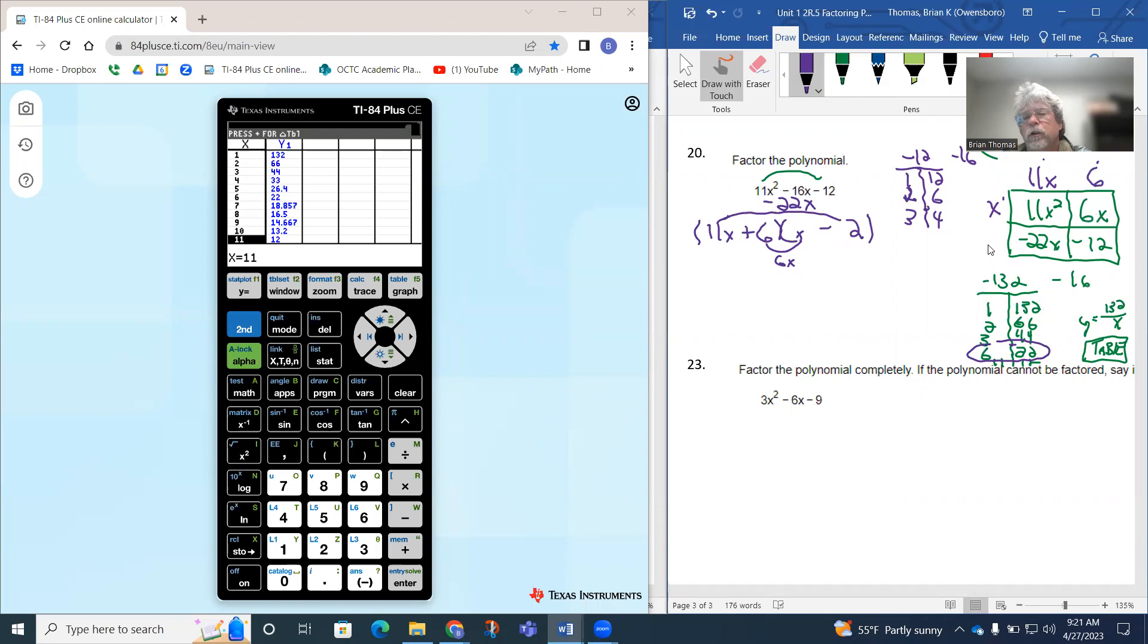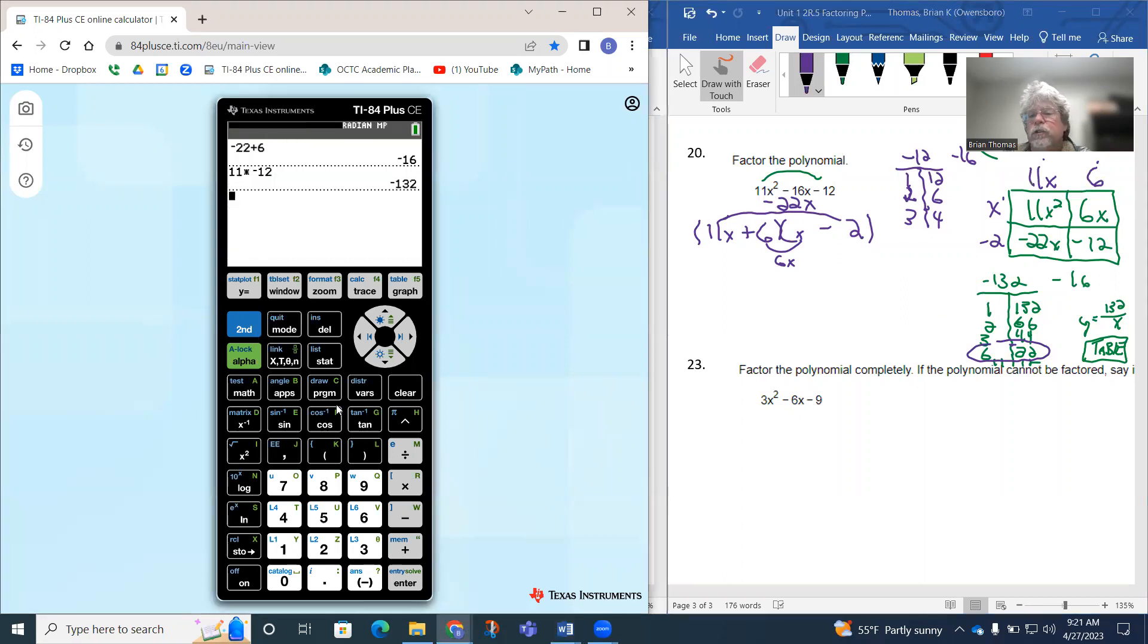Then if we come down here, what times 11x gives me this negative 22? Well, that has to be a negative 2. Again, if you wanted to double-check, you can use your calculator and use division. Negative 22 divided by 11, that's how you can find a missing factor. That does give me negative 2, so it does work. Negative 2 times 11x gives me negative 22x, and does negative 2 times 6 give me this negative 12? It does.